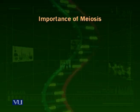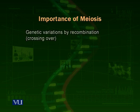Now we talk about the importance of meiosis. The most important feature of meiosis is the genetic variation by recombination.